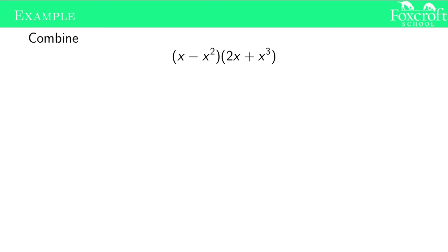Here's another example of just more powers of x, but it's not going to change anything. We do first, outer, inner, last. x times 2x is going to be 2x squared. Outer, x times x cubed. Remember this is x to the first, so this is going to be x to the fourth. Inner, it's going to be minus 2x cubed. And last, negative x squared times positive x cubed is going to be negative x to the fifth. And there's no like terms here, so you can leave your final answer like this.